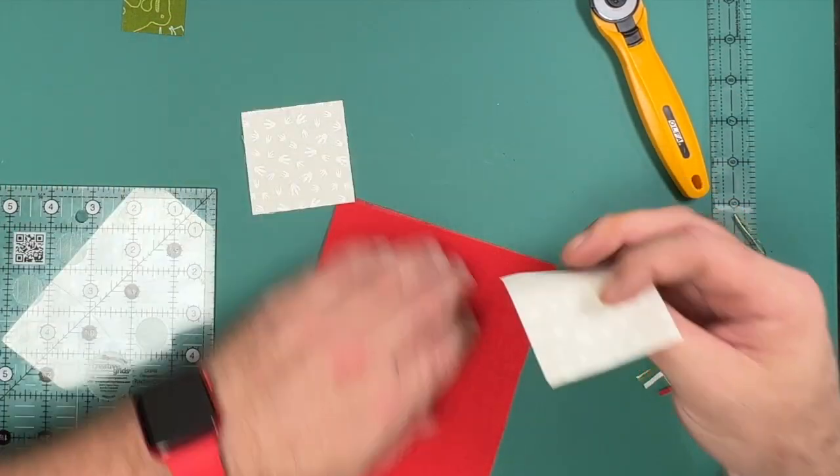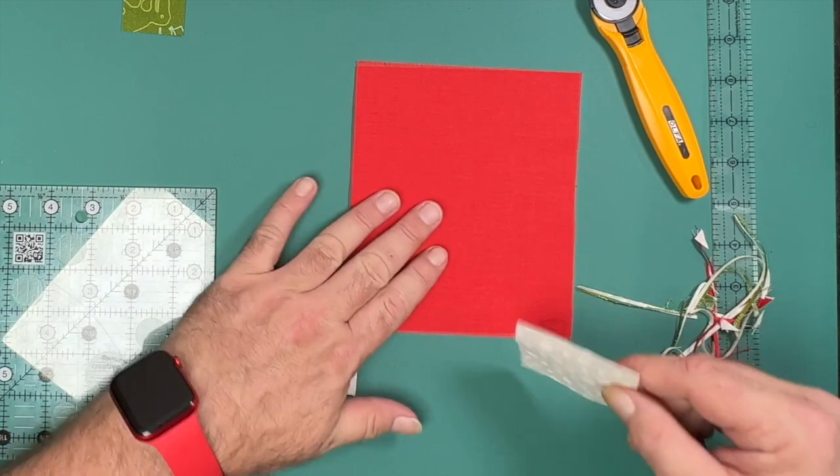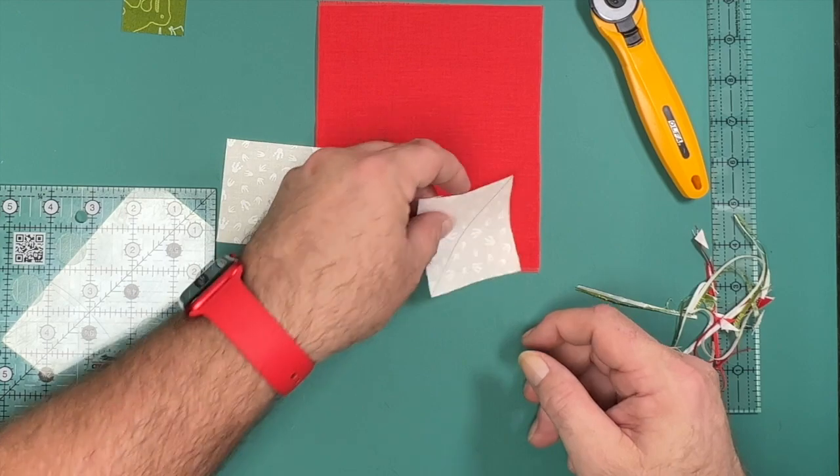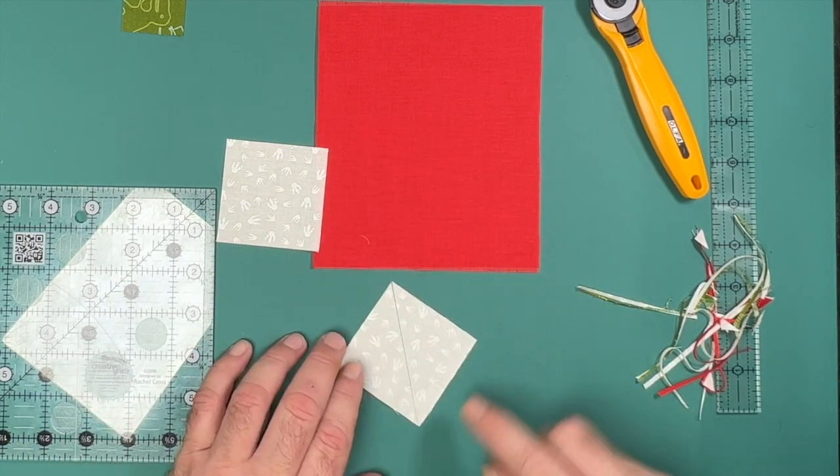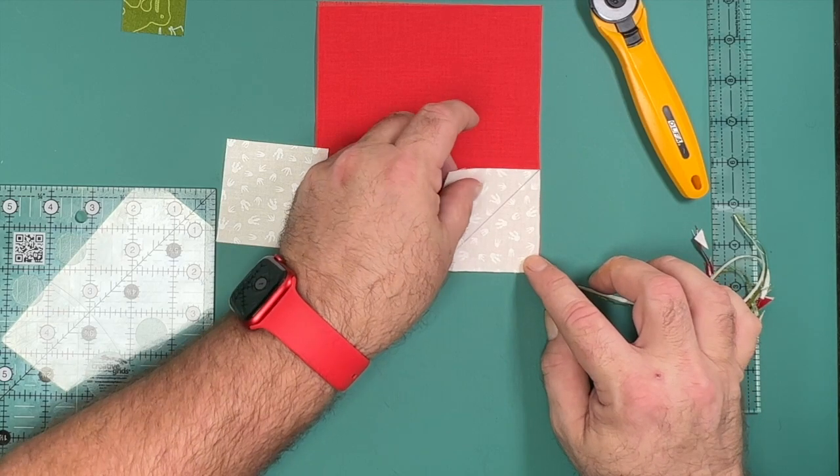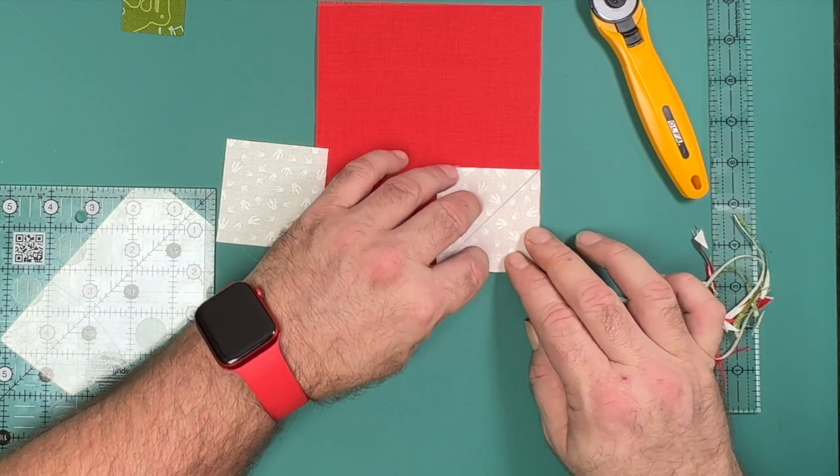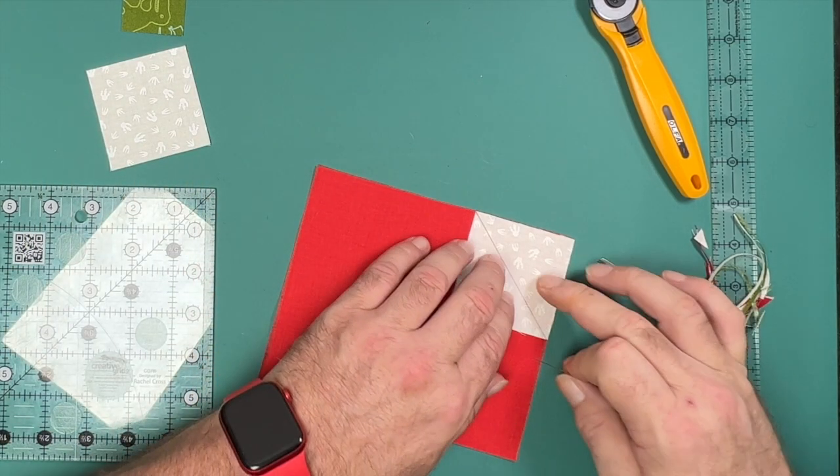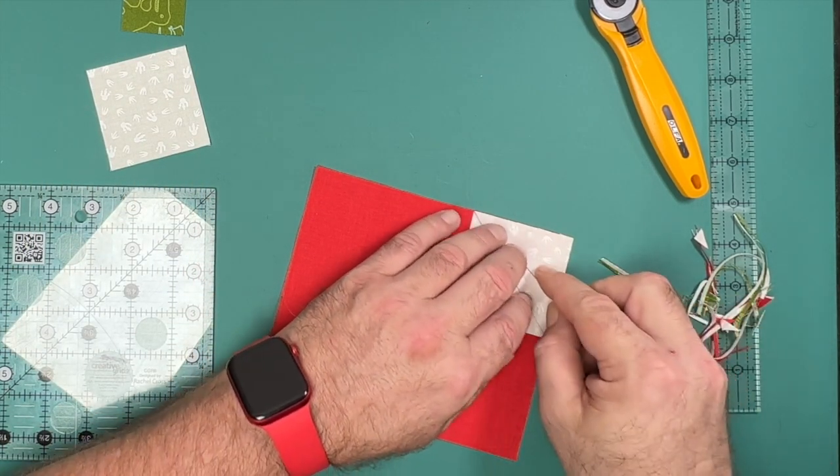Let's now move on to putting the sew and flip on the bottom of the body of our tulip. To do our sew and flip, we need to draw a diagonal line from corner to corner on our small square. We then place that on our large rectangle and make sure that all of our edges are lined up nicely. We'll then take this to the machine and sew one thread width to the right of our drawn line.